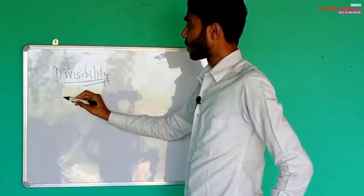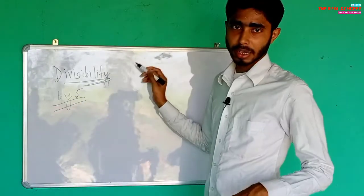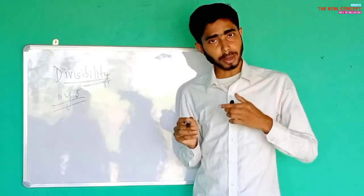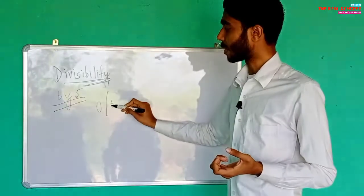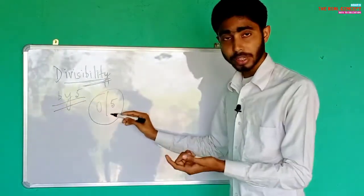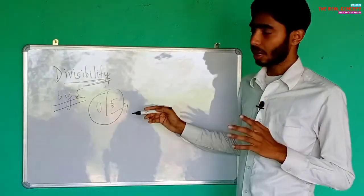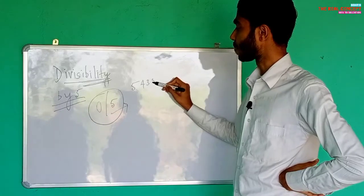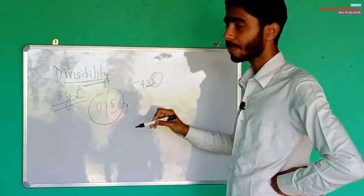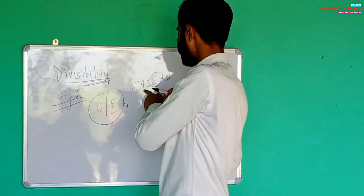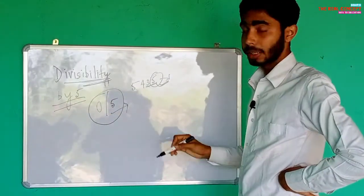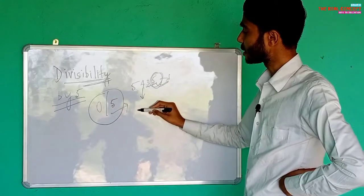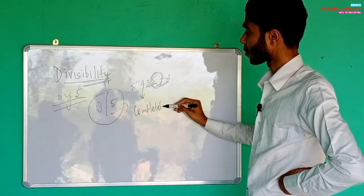Now let's check divisibility by five. The rule for divisibility by five is related to the ones place. Let's take an example: five thousand four hundred and thirty-five, that is 5435. The ones place digit is five. Since the ones place is five, we can say that 5435 is completely divisible by five.